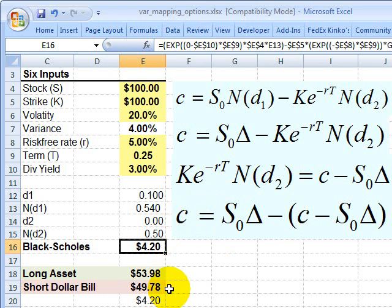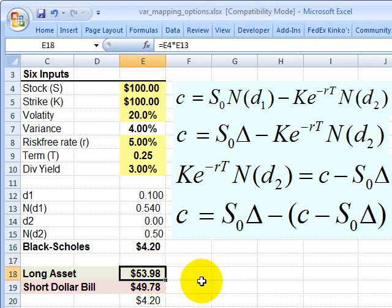And we've deconstructed it or broken it out into its two risk factors in this case. And we've said holding that call option is equivalent to being long the fractional share in this amount and short the U.S. dollar bill or borrowing at this amount.